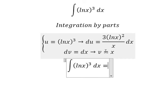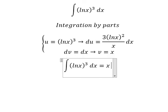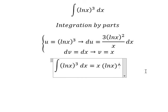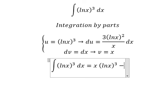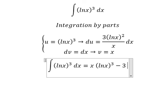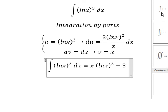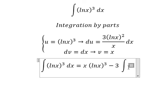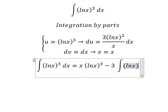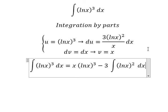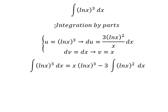So we have u multiplied by v, minus the integral of v du. The x terms cancel and now we just have only the number three, and then we have the integration of f(x) everything to the power of two.